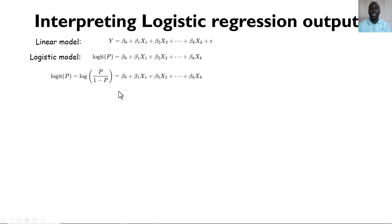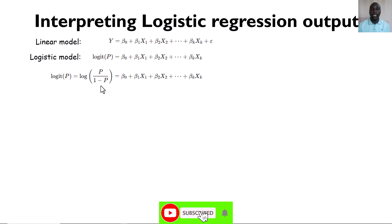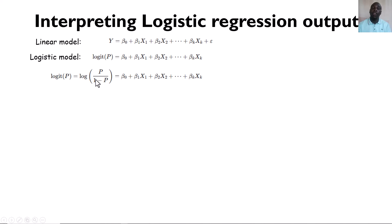If you are wondering what log of odds is: in binary logistic regression, we only have two possible outcomes — either the event happens or it does not. We are predicting our outcome in terms of probabilities. When we talk of odds, it is the probability of the event happening — say, someone having hypertension — over the probability of someone not having hypertension. That expression is what we call the odds. What I want you to appreciate is that when interpreting coefficients of a logistic regression model, we are interpreting them in terms of the change in log odds of the outcome.